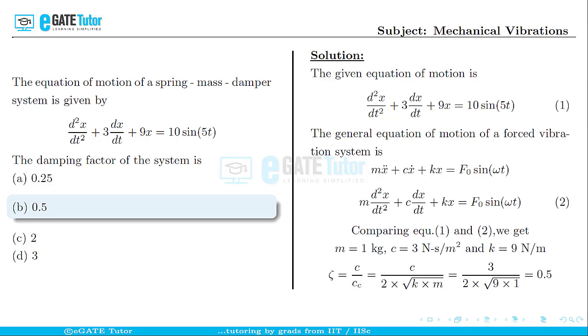That can be written as c/(2√(km)). We have the values of c, k and m. Substituting that and simplifying will give us the damping factor as 0.5.